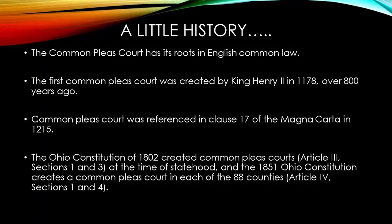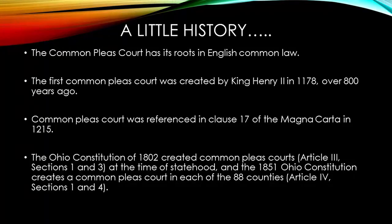The very first constitution the state of Ohio had in 1802 references the Common Pleas Court, and the next revision just before the Civil War also references it. Our court is hardwired into our constitution as Ohioans — it can't be taken away or modified without a constitutional amendment. It is that important that justice be provided in all 88 counties that the drafters of the constitution thought it important enough to provide that language for each of the 88 counties in Ohio.